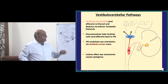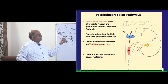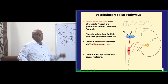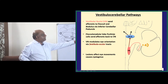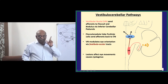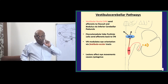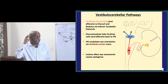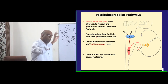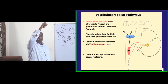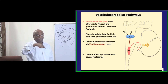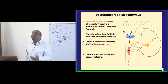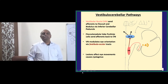In the flocculo-nodular lobe, the Purkinje cells are present. They send afferents back to the vestibular nucleus. The vestibular nucleus then modulates the orientation of the eye, and for that purpose it has connections with the sixth cranial nerve, which controls the extraocular muscles. This important reflex is called the vestibulo-ocular reflex, mediated by the vestibulo-cerebellar pathway.